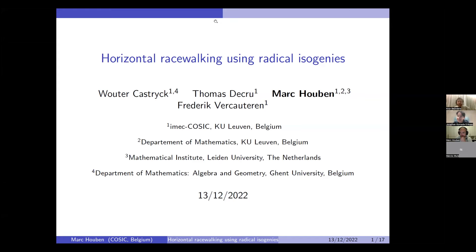Today is the seventh session of the Isogeny Club, and also the last one of this winter semester. Jonathan will tell us afterwards a bit more about how we will proceed. Today we have Mark, who's going to talk about horizontal racewalking using radical isogenies. You may have seen his practice talk last week at Asia Crypt already, but we have a bit more detail today. He's a PhD student shared between Leuven and Leiden — KU Leuven in Belgium and Leiden University in the Netherlands.